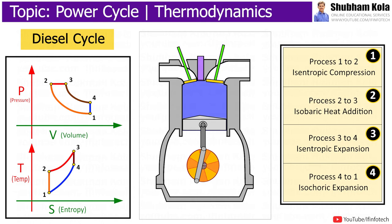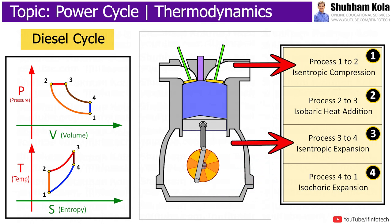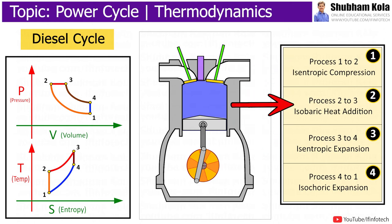It consists of four thermodynamic processes, out of which two processes are adiabatic. The third is a constant pressure process and the fourth process is a constant volume process.